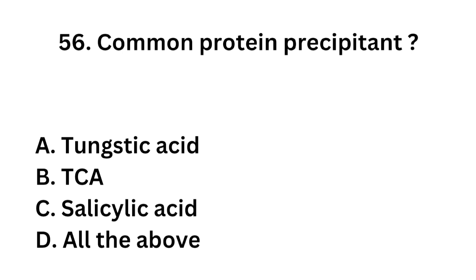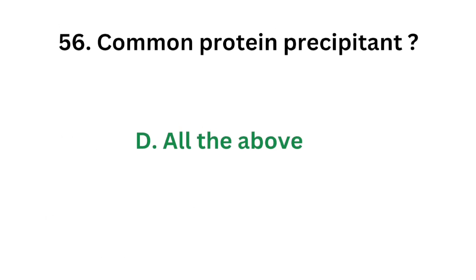Question number 56: Which of the following is a common protein precipitant? Option A: Tungstic acid. Option B: Trichloroacetic acid. Option C: Salicylic acid. Option D: All the above. The correct answer is Option D: All the above. All of these reagents are used for protein precipitation.